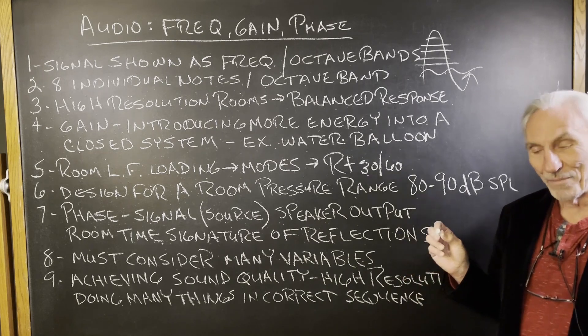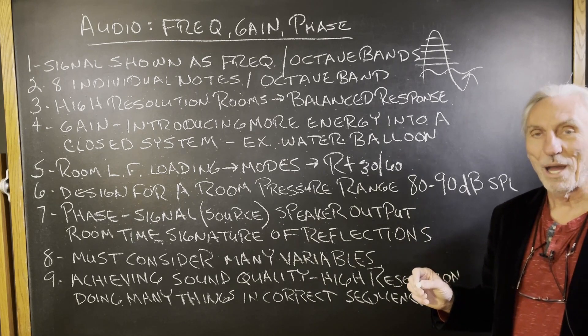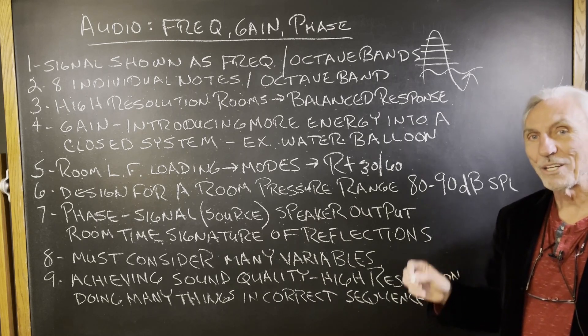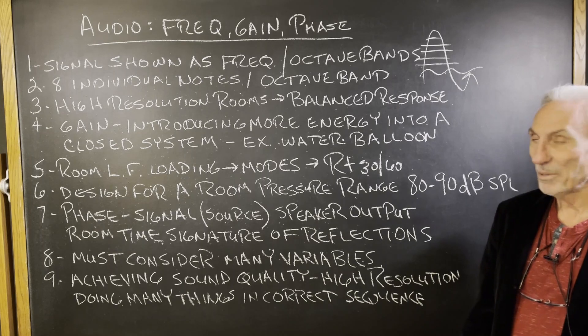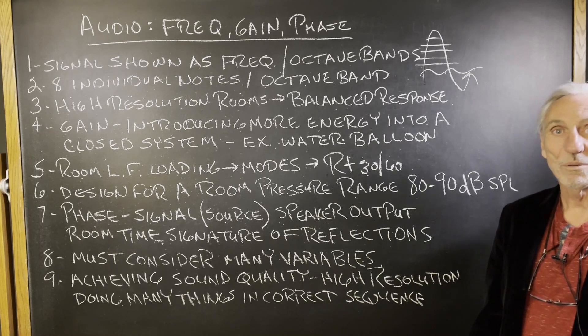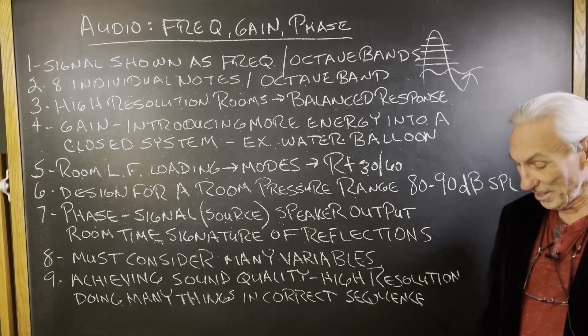So what you have to do is identify the issue first. Identify the problems. Develop a strategy to treat those issues. And then assign the appropriate rates and levels when you're dealing with absorption and the correct frequency response when you're dealing with diffusion.